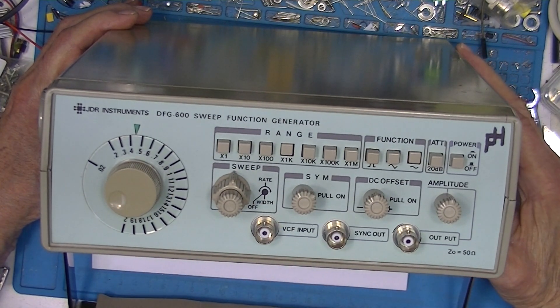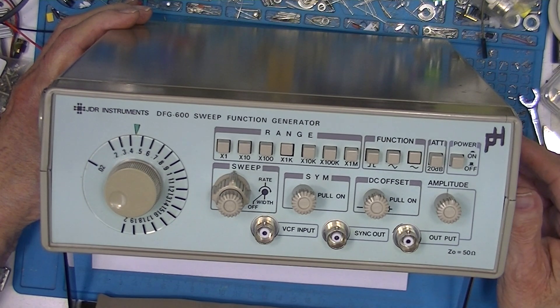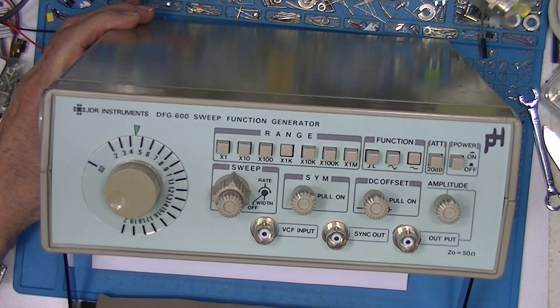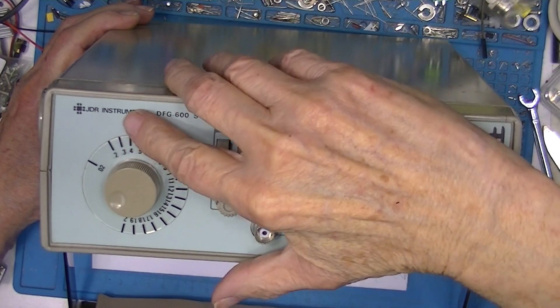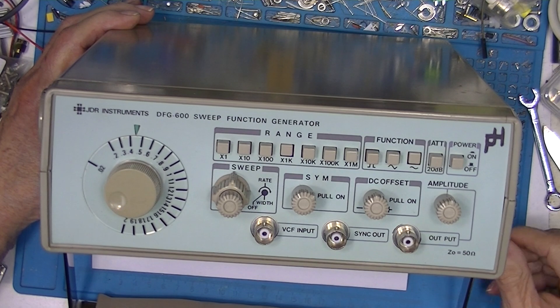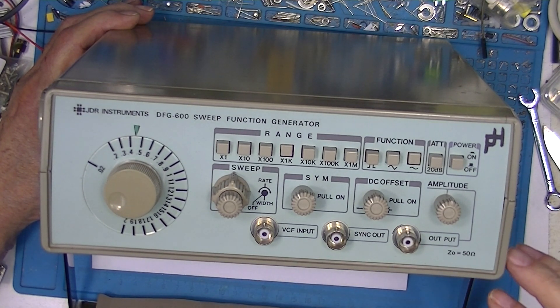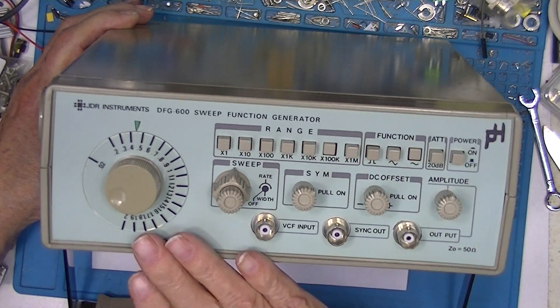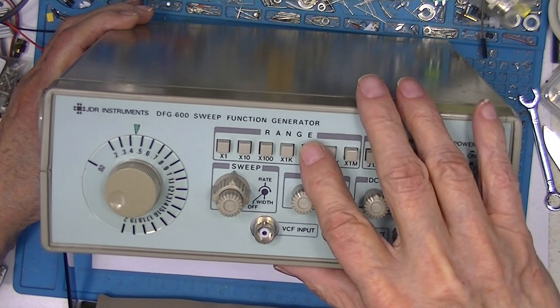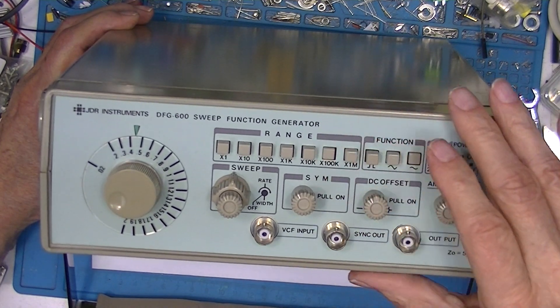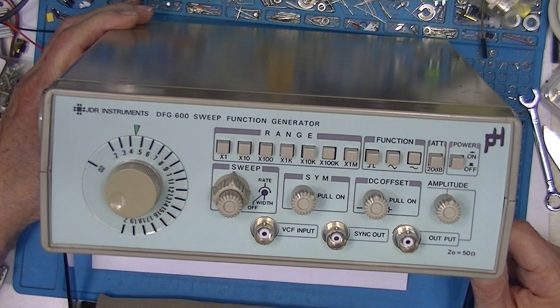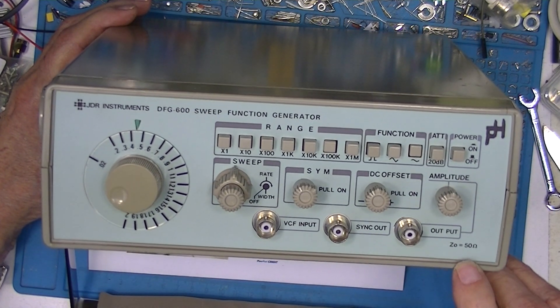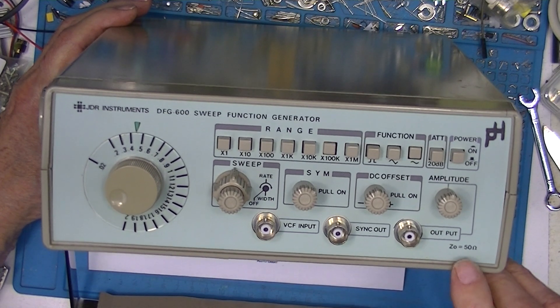I'm touching it right now. Only it's marked NIDA model 444. This is a JDR DFG 600, same font, everything. It says 50 ohms, so does the other one. There's even a green sticker on the other one same as this. It's exactly the same.